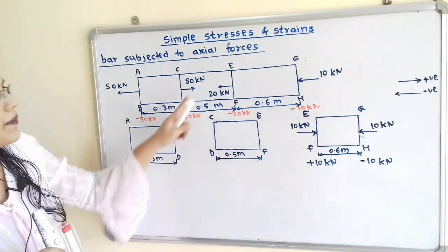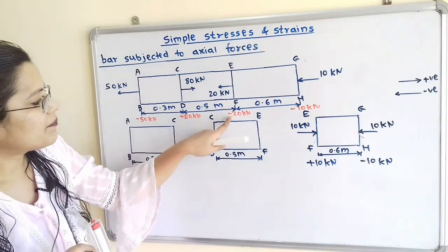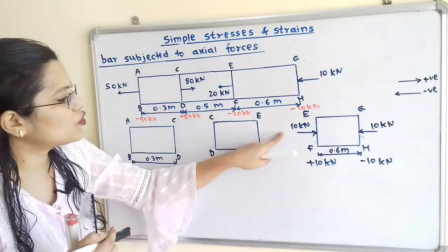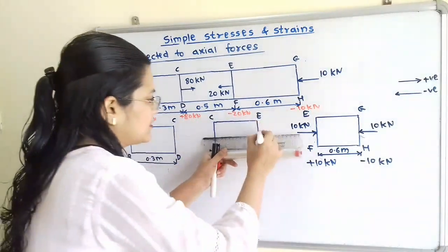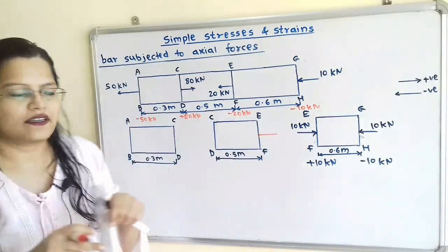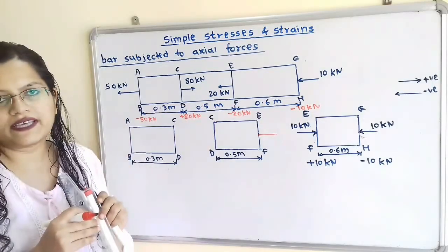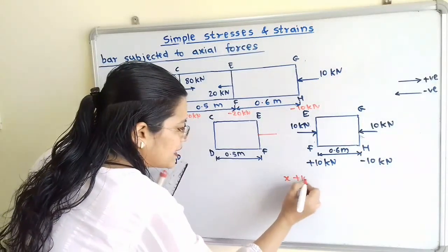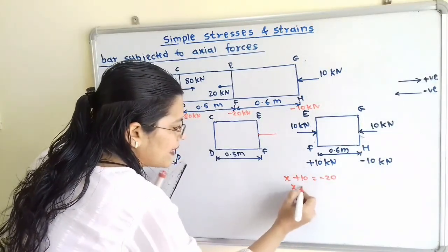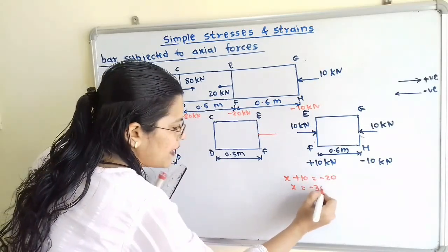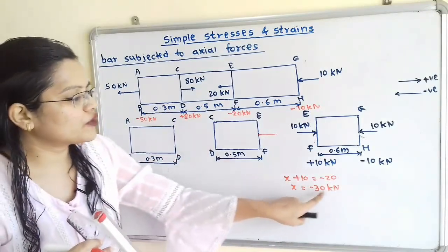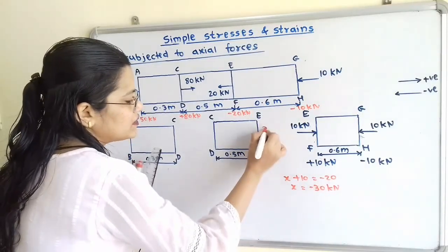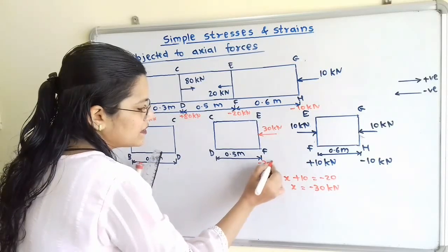This force is on section EF, but in the question at section EF, minus 20 kN is given. For block CDEF, we do not know the magnitude and direction at this section, so I will show it with a line and consider this unknown term as X. So X plus 10 equals minus 20, therefore X equals minus 20 minus 10, that is minus 30 kN. Direction is towards the left hand side, magnitude 30 kN, shown as minus 30 kN.